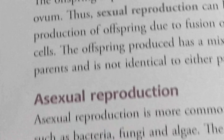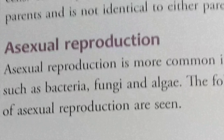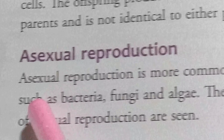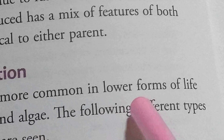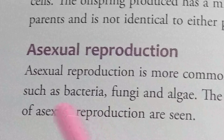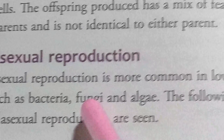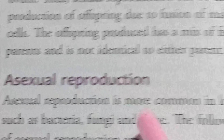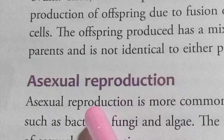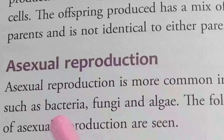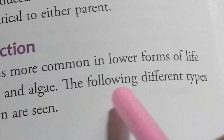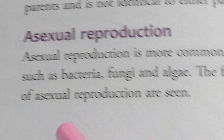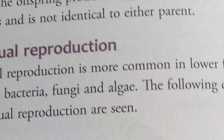Asexual reproduction is more common in lower forms of life such as bacteria, fungi, and algae. The following different types of asexual reproduction are seen in lower class organisms.